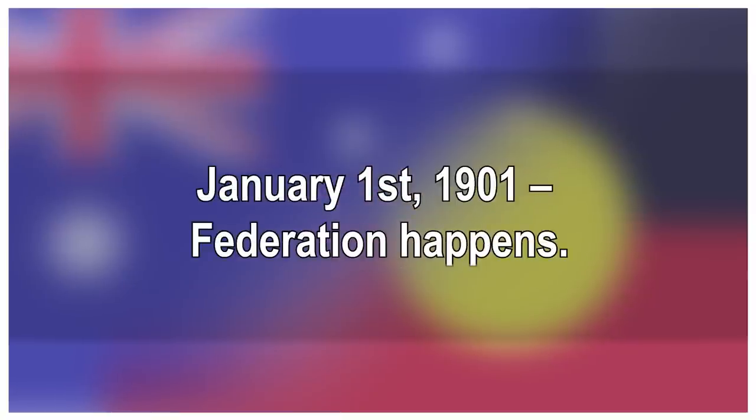January 1st 1901 — Federation happens. A new year, a new country. The Commonwealth of Australia is proclaimed in Centennial Park in Sydney. Up to half a million people lined the way to the federation parade. There were fireworks displays, pageants, sporting events, and celebratory dinners all around Australia. In Sydney, celebrations lasted a week. Edmund Barton — remember him — became the first Prime Minister of Australia.